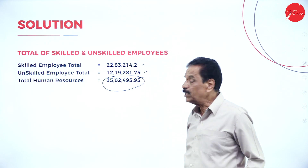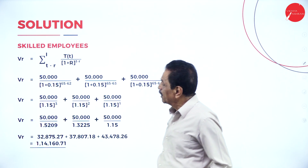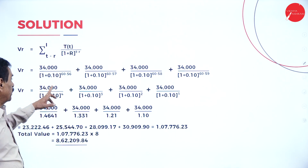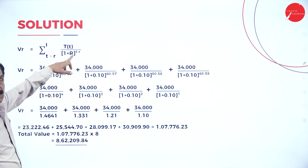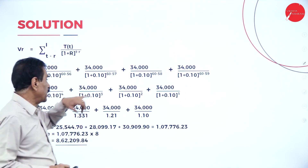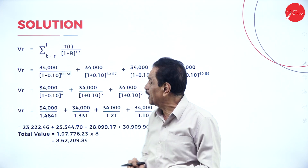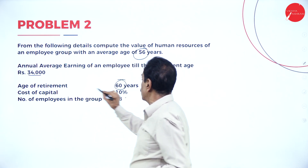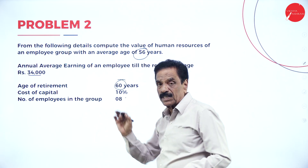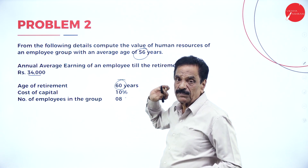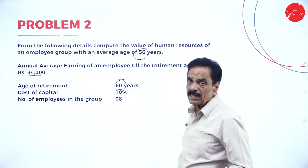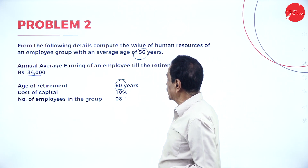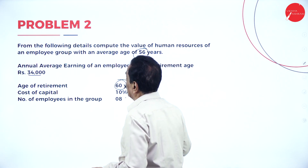For a 10-mark question, about three to four problems may come. The formula always remains the same: 1 plus R (discount rate), raised to the power of (age of retirement minus current age). For example, within an average age of 60 years and retirement age 60: powers are 60 minus 56, 60 minus 57, 60 minus 58, 60 minus 59. That is the base — you take the discount rate and apply it accordingly.